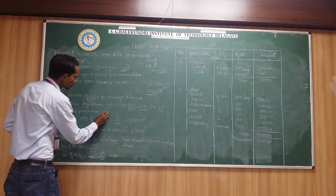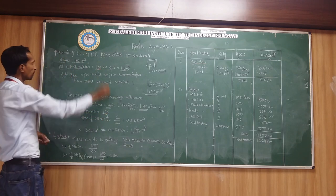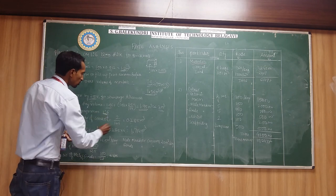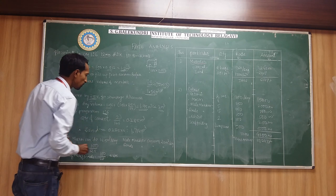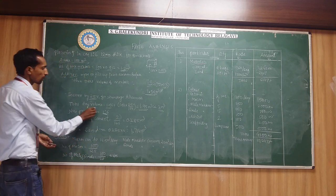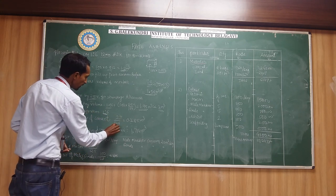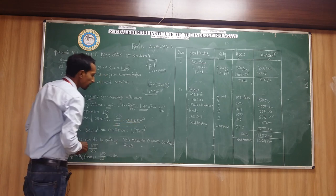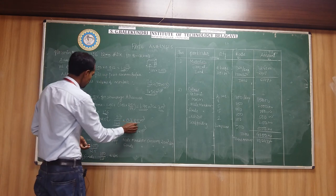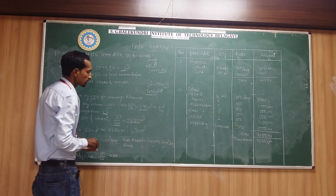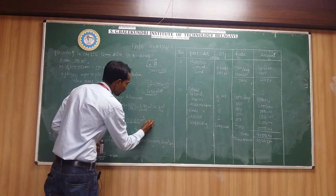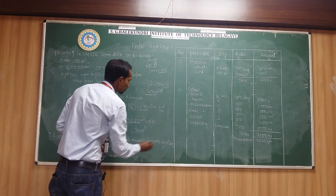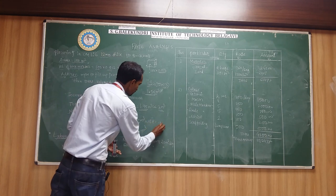The proportion 1 is to 6 is mentioned in the problem. For 2 meter cube of volume, dividing by the proportion gives 0.285 meter cube as the volume of cement. Converting into bags, multiply by 28.8 and you get 9 bags. One bag contains 50 kg.